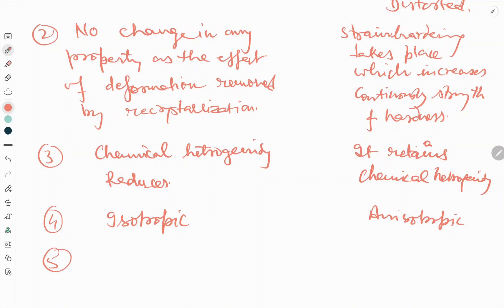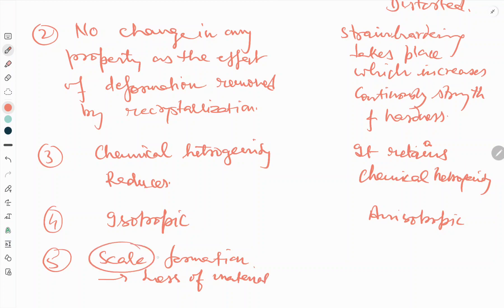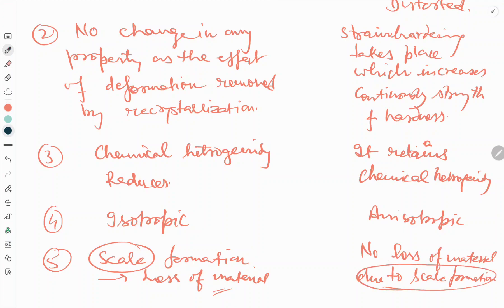The fifth difference: in hot working, there is scale formation on the surface of the bulk material, resulting in a loss of material. In cold working, no scale formation happens, so there is no loss of material due to scale formation.